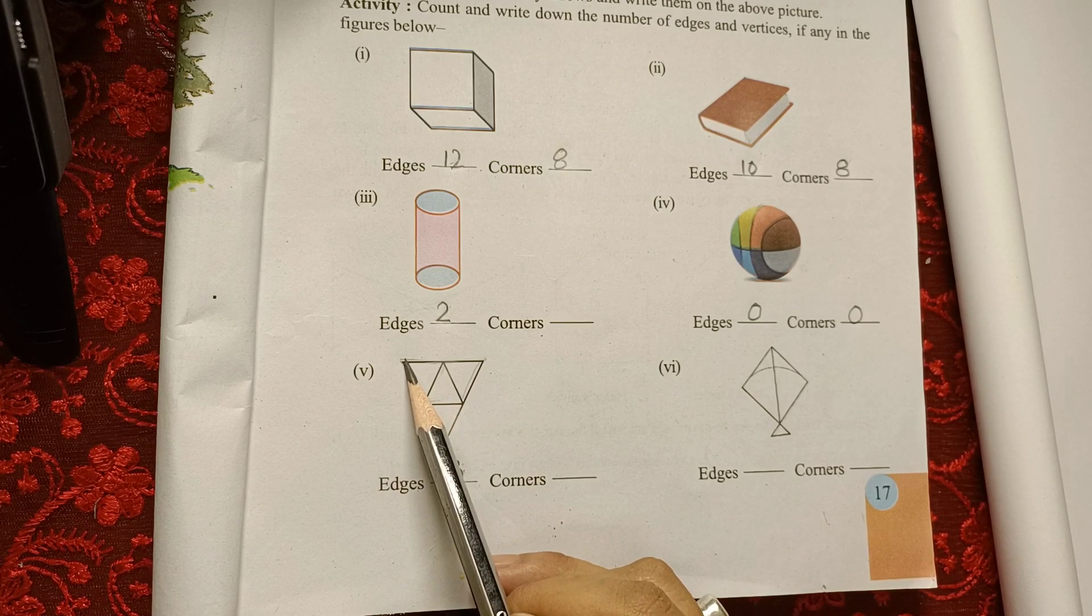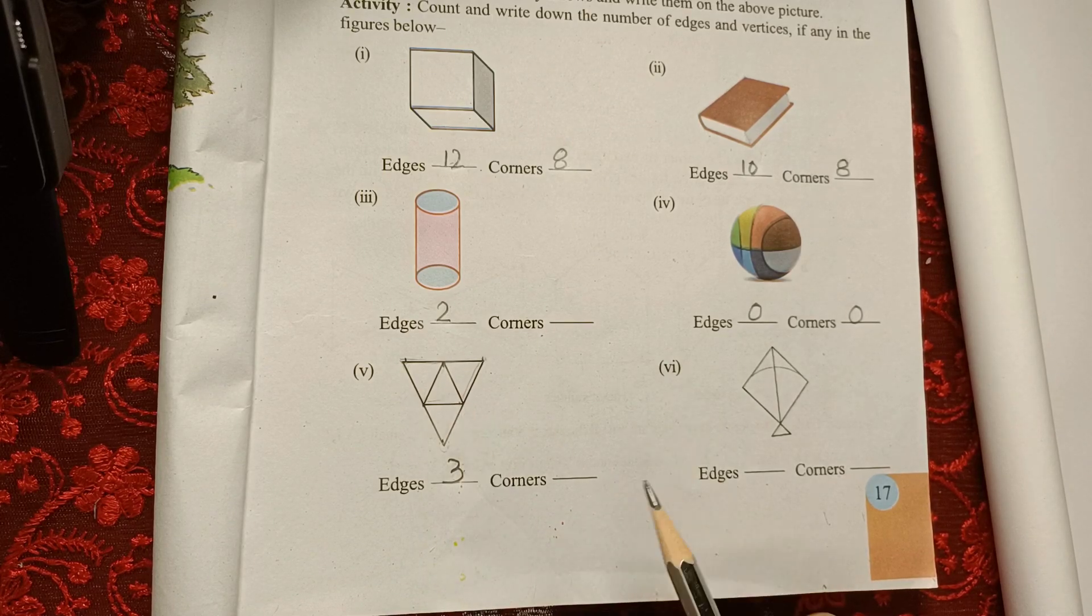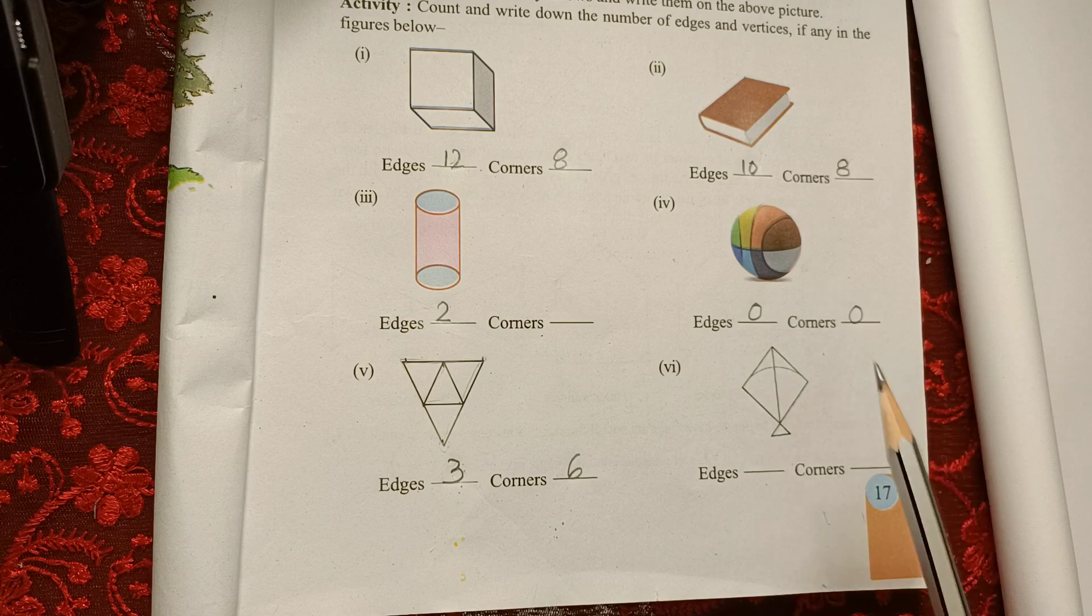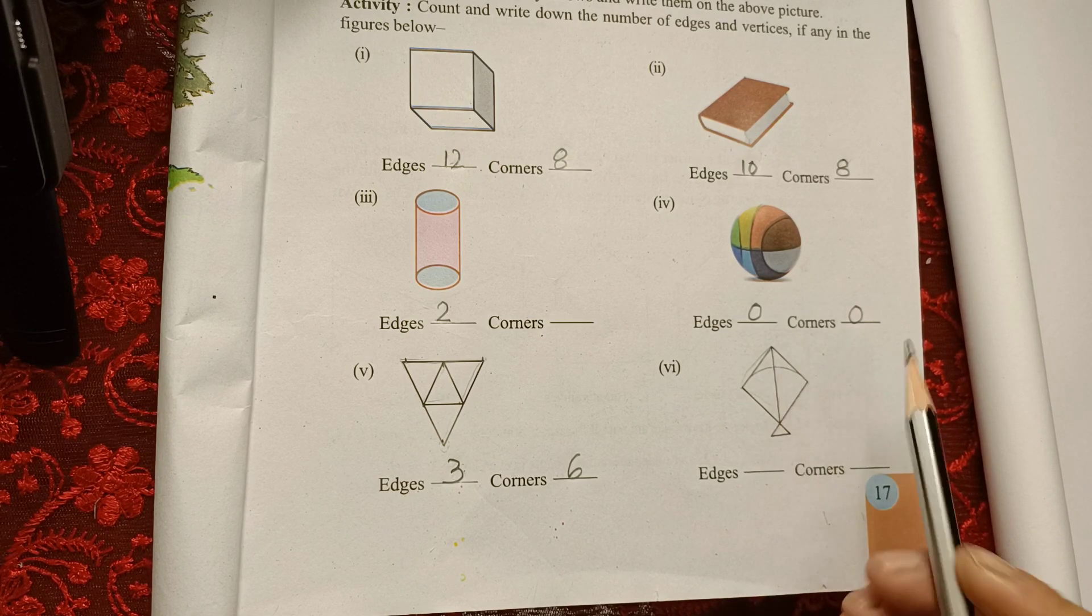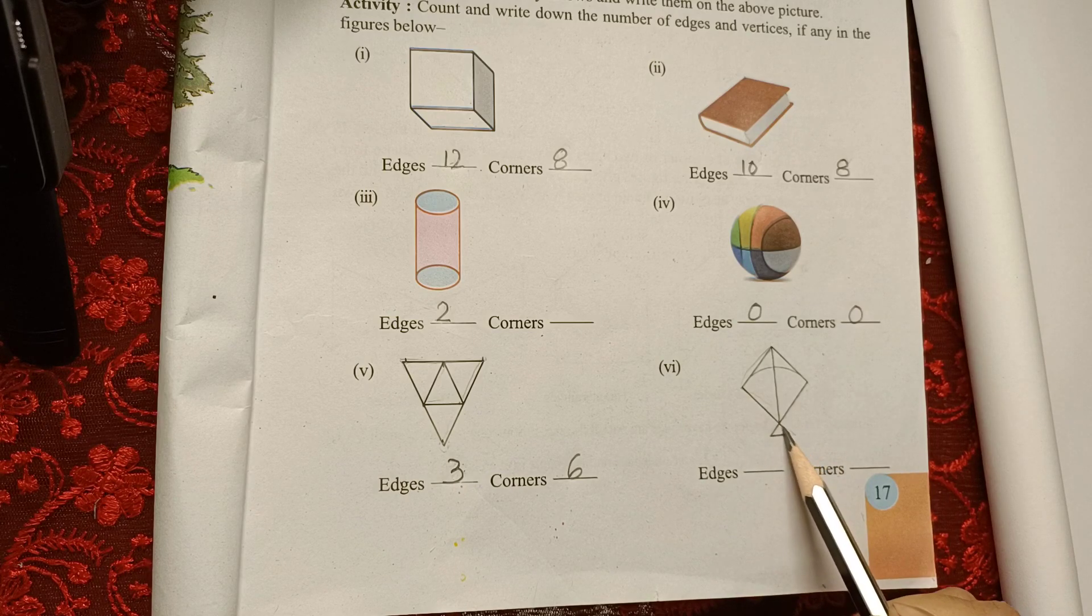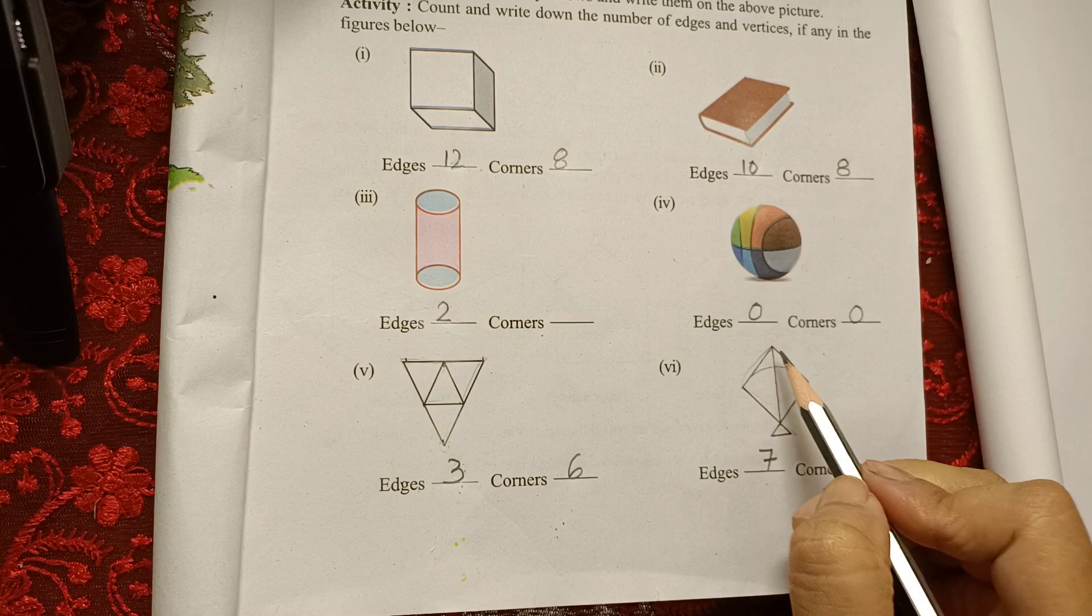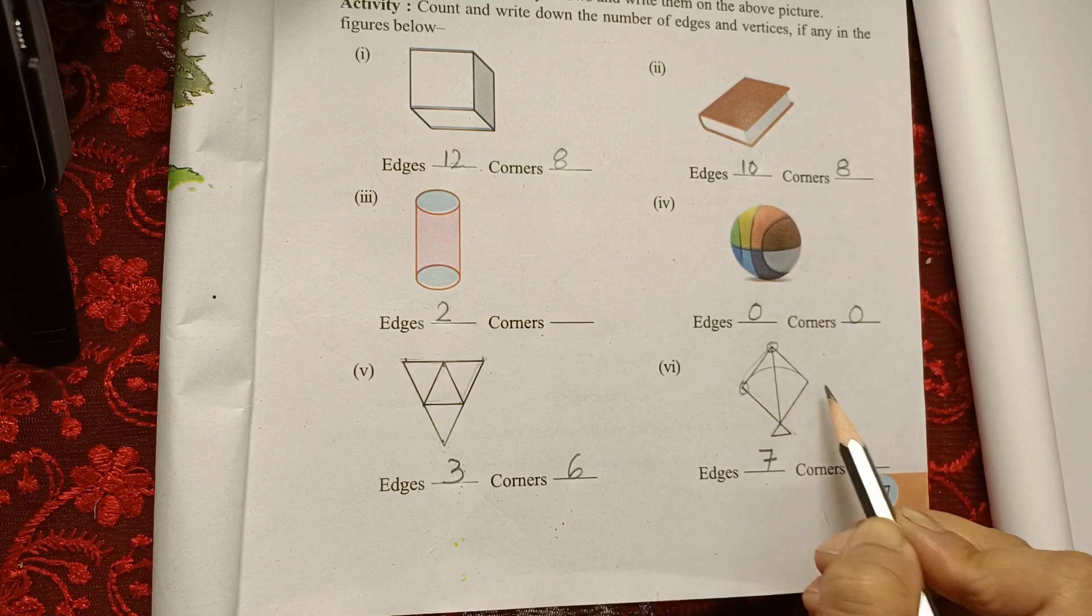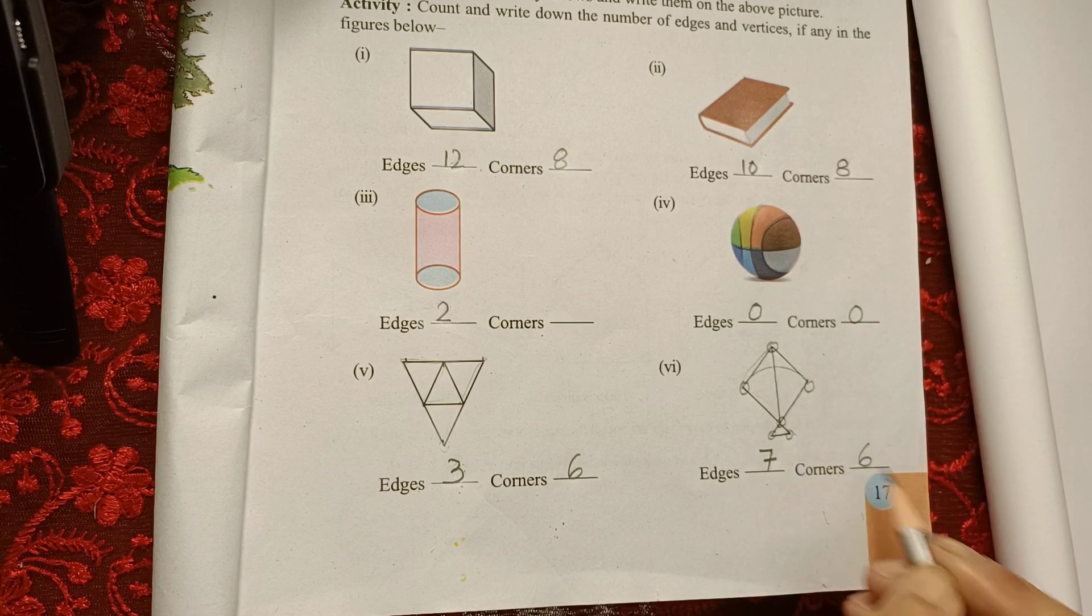And corners we have how many? 1, 2, 3, 4, 5, 6, we have 6 corners. And for this kite, 1, 2, 3, 4, 5, 6, 7, so 7 edges. And corners how many? 1, 2, 3, 4, 5, and 6, so 6 corners.